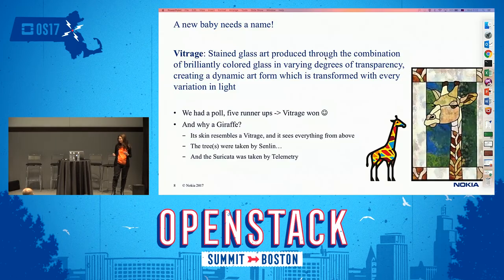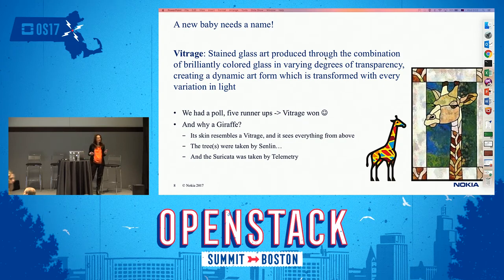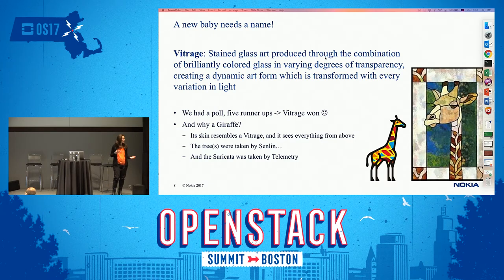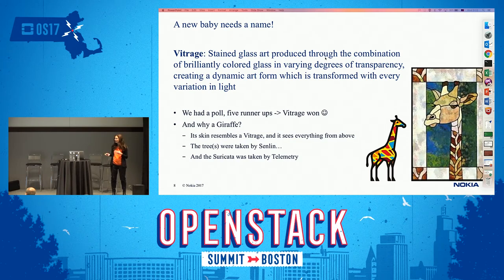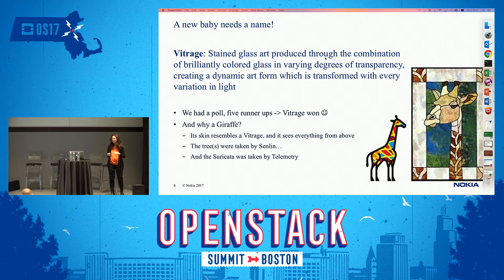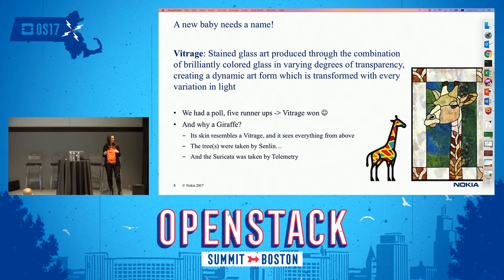We decided to create a new project in OpenStack for root cause analysis and started checking feasibility. The first step was to find a name — we made a poll, everybody suggested names, and the winner was 'vitrage.' Only much later did we realize that a lot of people don't know what vitrage means. Vitrage is a French word for stained glass window — made of small pieces of colored glass, and only if you stand back can you see the whole picture. This is what Vitrage does: it tries to see the entire cloud environment, all the alarms, and make reason out of it.